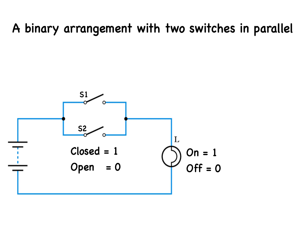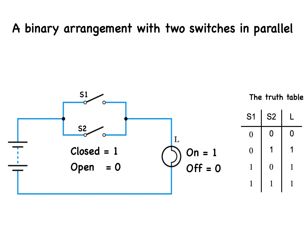Here is another binary arrangement with two switches in parallel, which generates this truth table. The two switches form what is known in logic gate terms as an OR gate. We state its logic in the equation: L equals S1 OR S2.